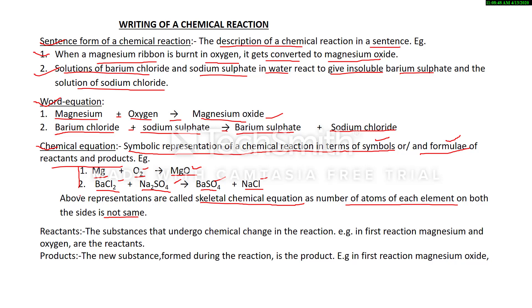In a chemical equation we can identify reactants — the substances that undergo chemical change in the reaction. In the first reaction, magnesium and oxygen are the reactants. Products are the new substances formed during the reaction; magnesium oxide is the product in the first reaction. Every chemical equation involves reactants and products, separated by an arrow mark.